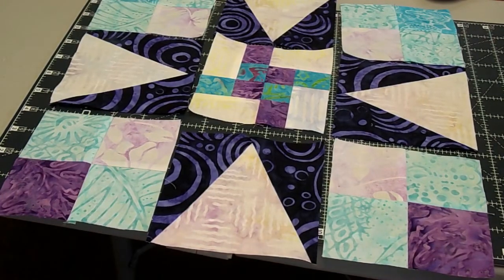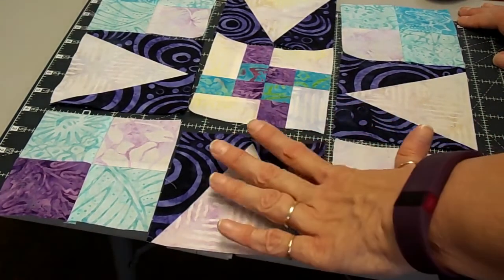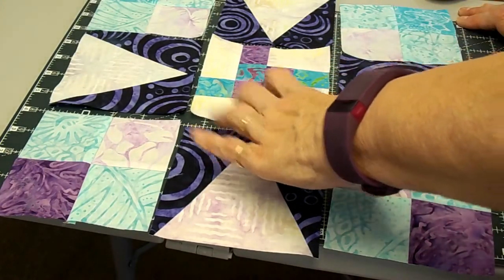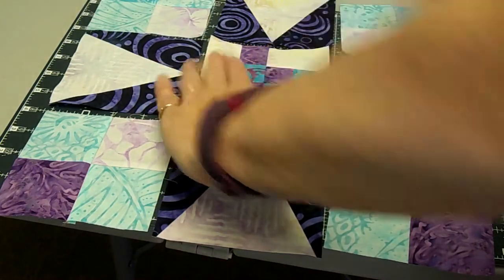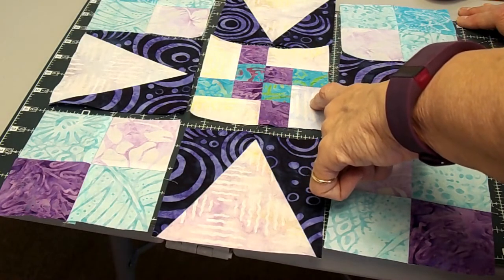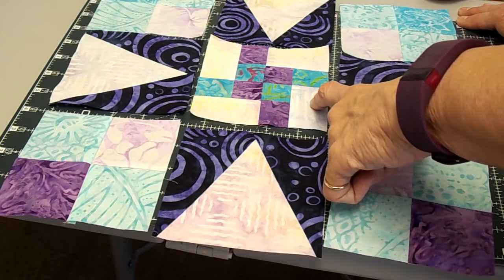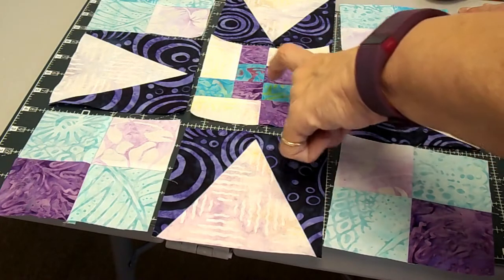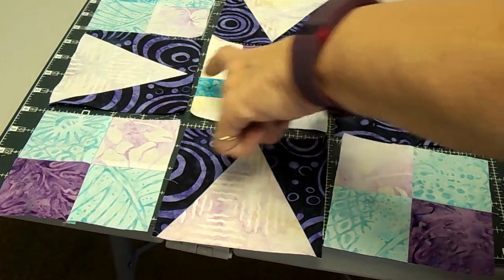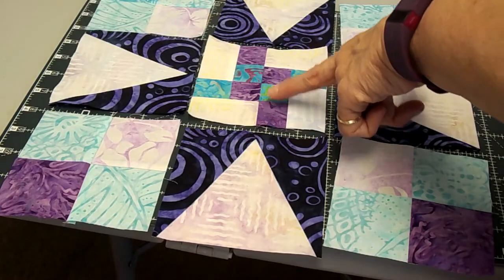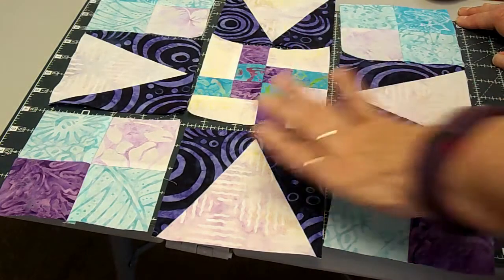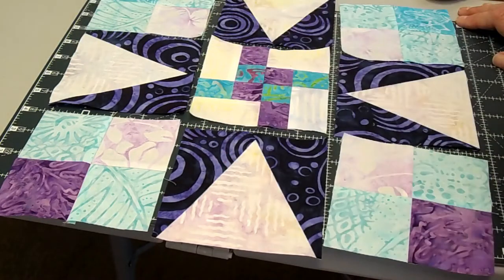Here we are getting ready to assemble Block 3. I wanted to talk about the center area. The center is two little blocks on a rectangle, but the blocks on the rectangle are sometimes backwards to each other. You're going to mirror image them: two with the purple on the right and turquoise on the left, and two with the turquoise on the right and purple on the left. Then it makes that beautiful little four patch right in the center.